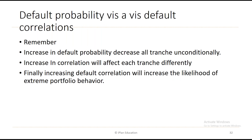You have to study the interactions between default probability and default correlation — this is very important from the exam point of view as GARP often tests this in FRM Level 2 exams. Key point: an increase in default probability decreases all tranche values unconditionally — this is logical. An increase in correlation will affect each tranche differently.